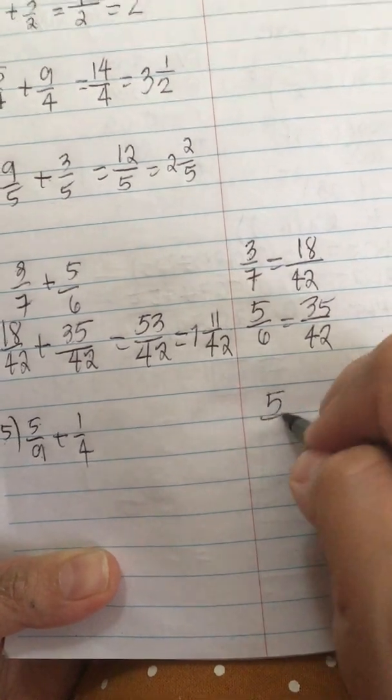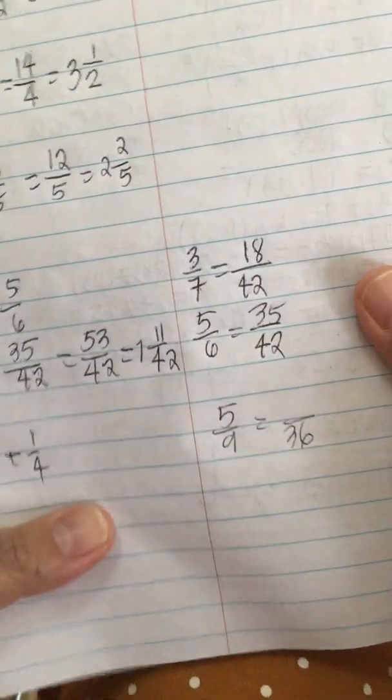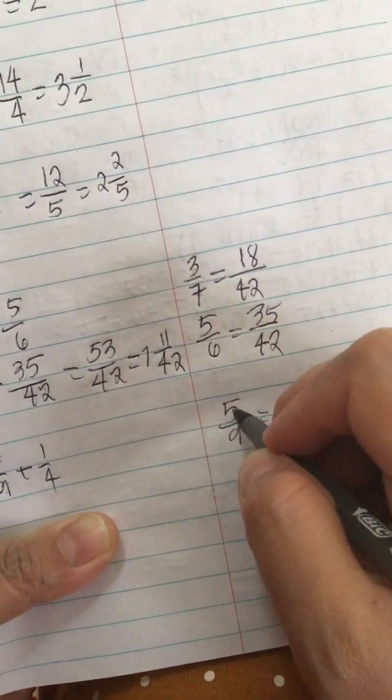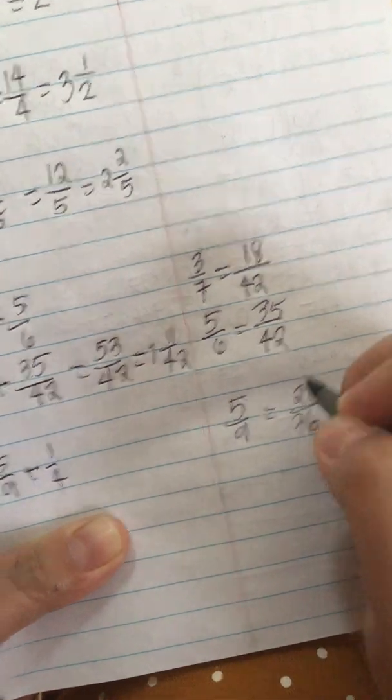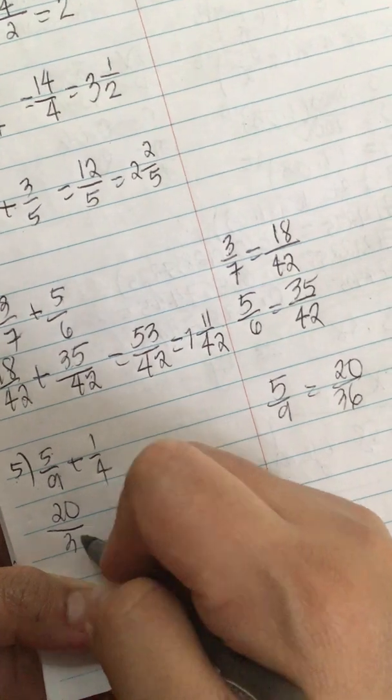So we have 5 over 9 equals something over 36. So 36 divided by 9 is 4, times 5 is 20. So we have 20 over 36.